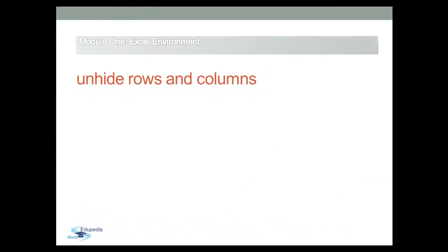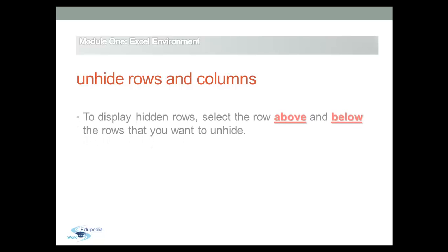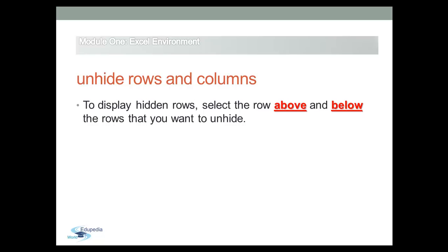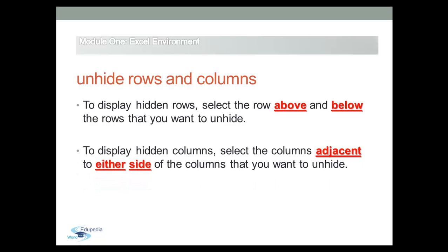If you want to unhide rows or columns, drag in the worksheet to select the rows or columns both before and after the hidden rows or columns. To display hidden rows, select the row above and below the rows you want to unhide. To display hidden columns, select the columns adjacent to either side. You must select at least one column on either side of the hidden column in order to unhide them.